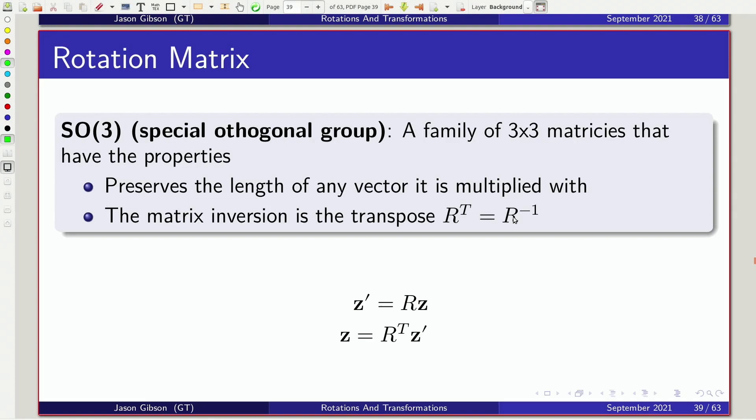So R transpose is equal to R inverse. And this allows our math to be a lot simpler. So here we have some Z prime, which is a rotated point. We're going to take some vector Z and rotate it by R to give ourselves Z prime. And after we do that, we can just apply the transpose and rotate the rotated point back to the original point Z.